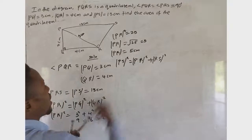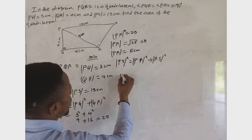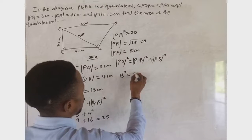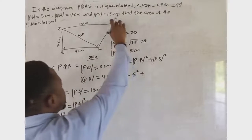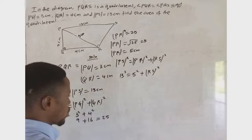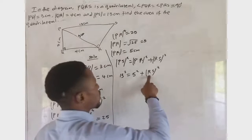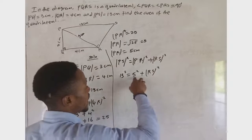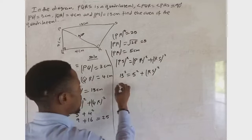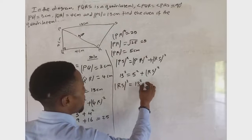Our PS is given as 13 cm, and PR we found to be 5 cm. So we have: PS² = PR² + RS², which gives us 13² = 5² + RS². Now let's rearrange this formula — we take 5² to the other side, so RS² = 13² minus 5².